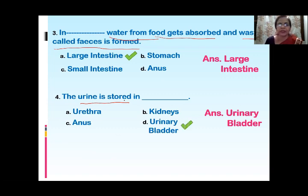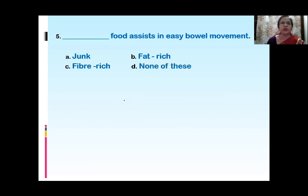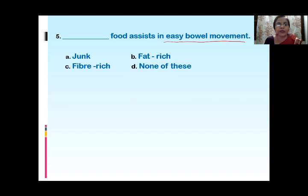The next question: Dash food assists in easy bowel movement. Option one is junk food, second is fat rich food, third is fiber rich food, and fourth is none of these. For easy bowel movement, which food will help? It is fiber rich food.